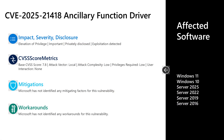The first vulnerability I'll talk to today is CVE-2025-21418. This is an important elevation of privilege vulnerability in the ancillary function driver. This one was privately disclosed to Microsoft, but is one where exploitation was detected prior to release. It has a base CVSS score of 7.8. The attack vector is local, the attack complexity is low, privileges required is low, and user interaction is none. There are no documented mitigations or workarounds. As far as affected software, it's all versions of Windows in mainstream support: Windows 10 and 11 on desktop, as well as Server 2016, 2019, 2022, and 2025 on the server side.